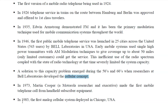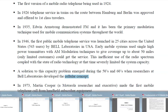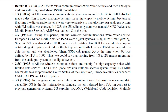In 1983, the first analog cellular system was developed in Chicago, USA. Before 1983 — before the first generation — all wireless communications were voice-centric and used analog systems with single sideband modulation.